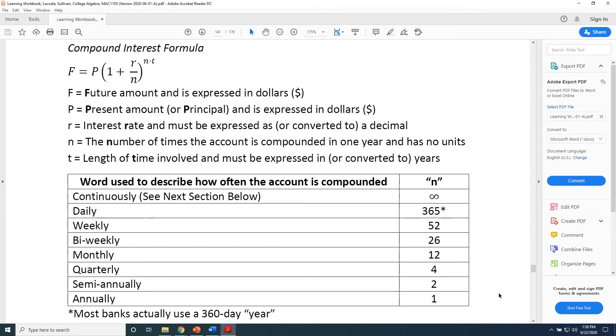Let's work from the bottom up. If your account is compounded annually, that means that you receive money once per year. This makes sense. When we think about an annual event, that is an event that happens only once each year. So if your account is compounded annually, then it gets money once each year. This tells us the value of n, the number of times the account is compounded in one year.